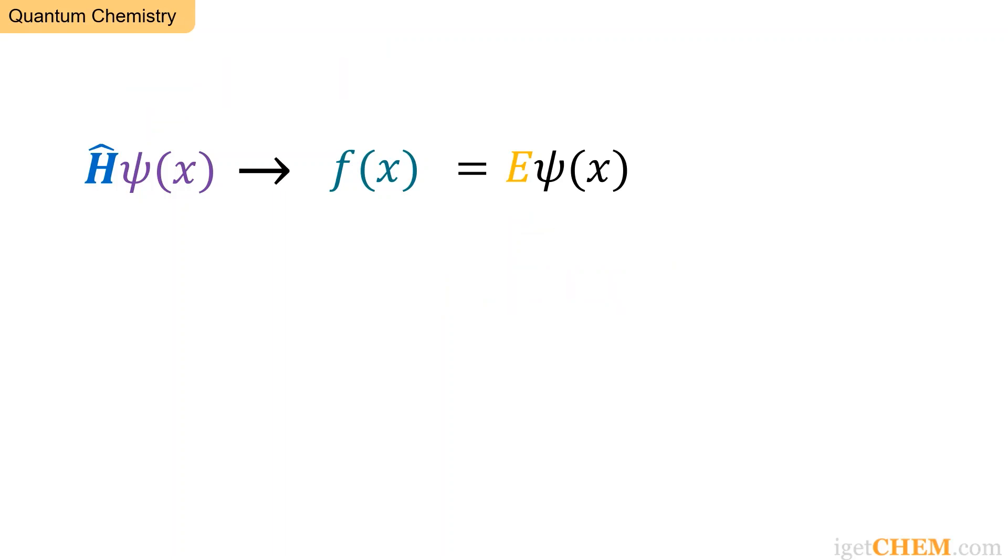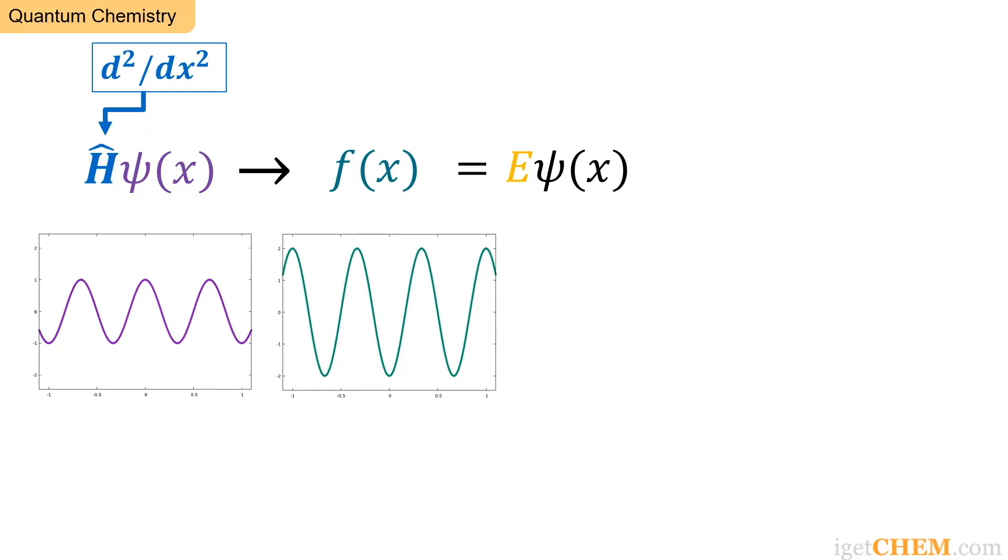The number E corresponding to each eigenfunction is then called its eigenvalue. Let's take a look at an example. It turns out that the operator d squared dx squared is a Hermitian operator. The cosine functions are eigenfunctions of d squared dx squared. This is clear since the derivative of cosine is negative sine and the derivative of negative sine is negative cosine. This is shown as the green function f of x.